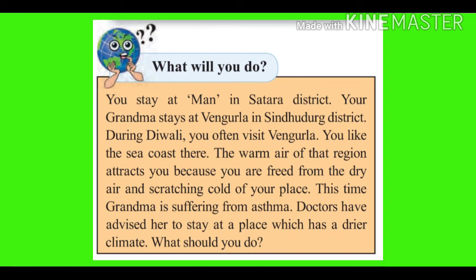What will you do? You stay at Maan in Satara district. Your grandma stays at Vengurla in Sindhudurga district. During Diwali, you often visit Vengurla. You like the seacoast there. The warm air of that region attracts you because you are freed from the dry air and scratching cold of your place. This time, grandma is suffering from asthma. Doctors have advised her to stay at a place which has a drier climate. What should you do?